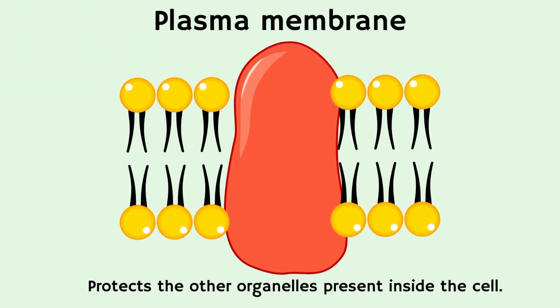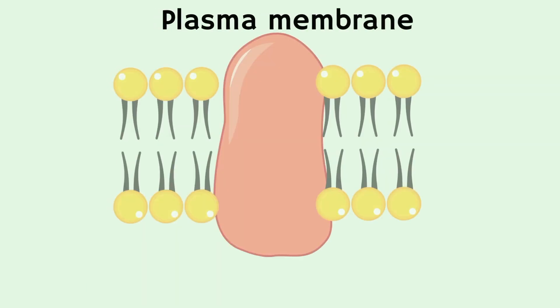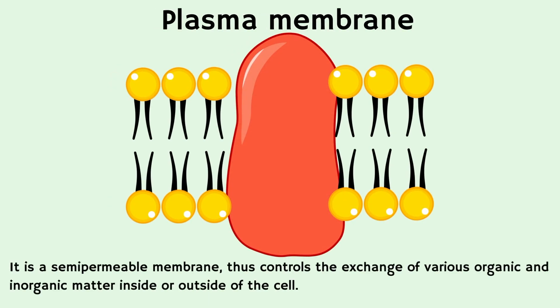First, it protects the organelles present inside the cell. Plasma membrane is a semi-permeable membrane. It controls the exchange of various organic and inorganic materials inside or outside the cell.